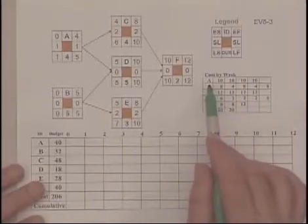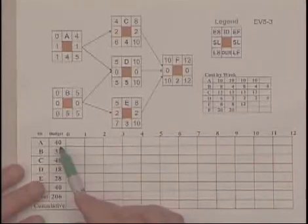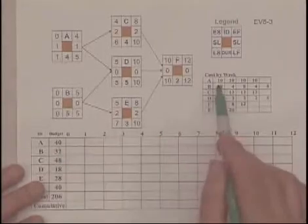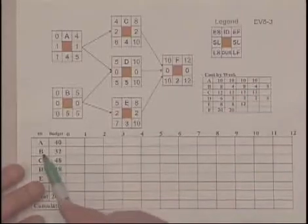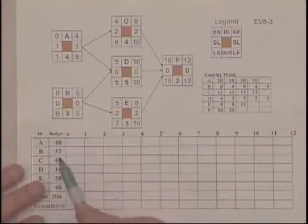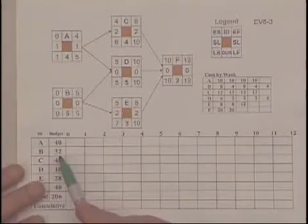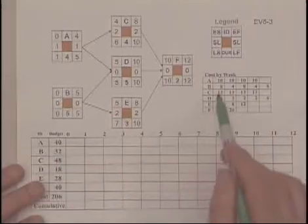For example, Activity A has a total cost of let's say $40,000 and it's $10,000 across the four months. Activity B, which is supposed to take five months, has a total cost of $32,000.